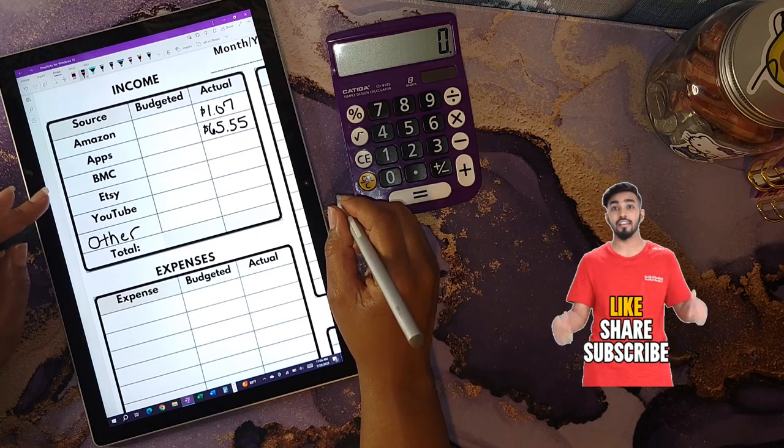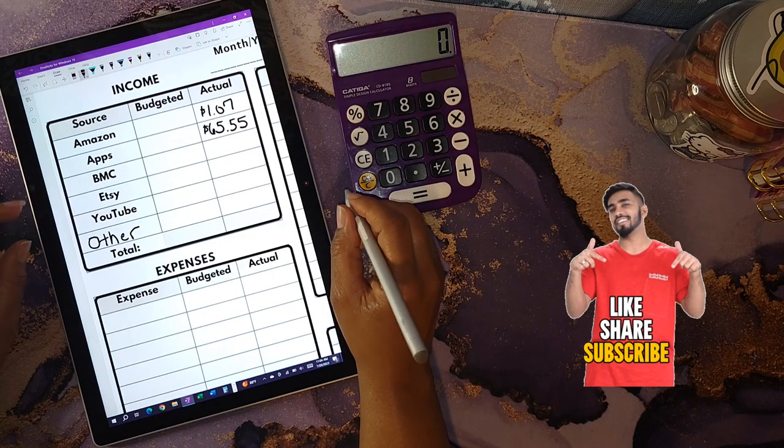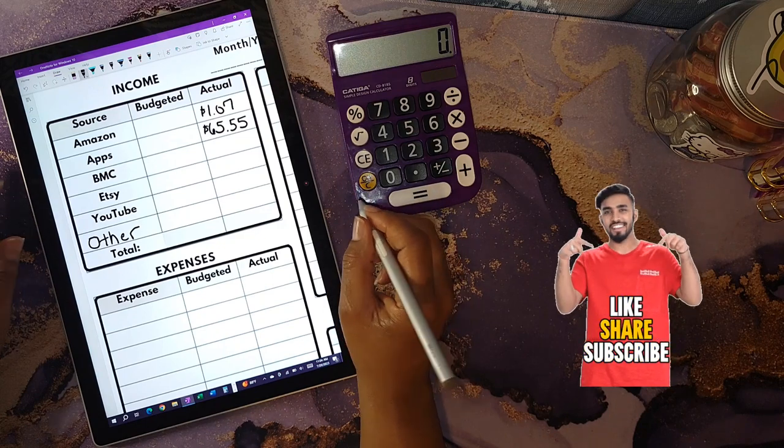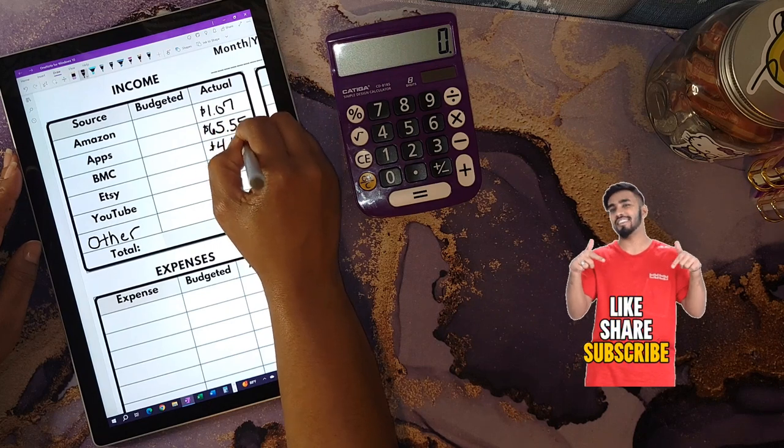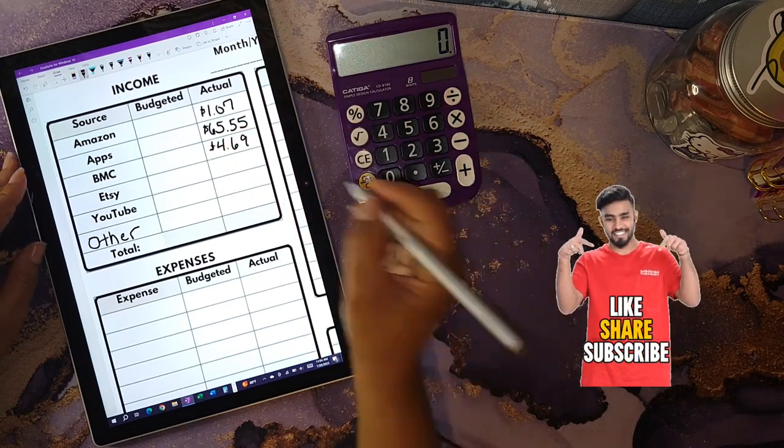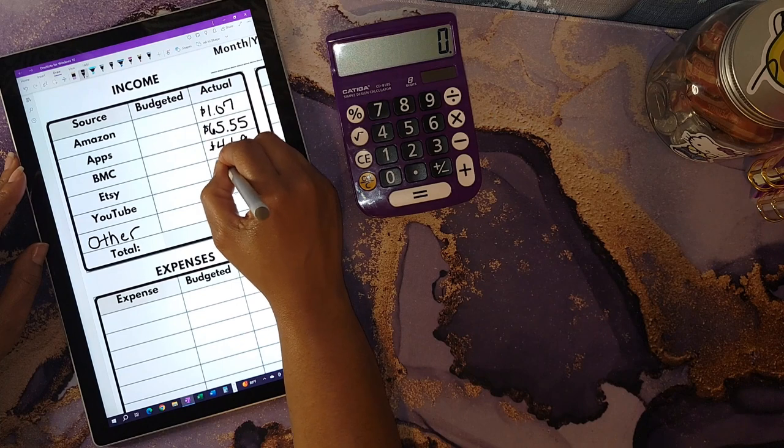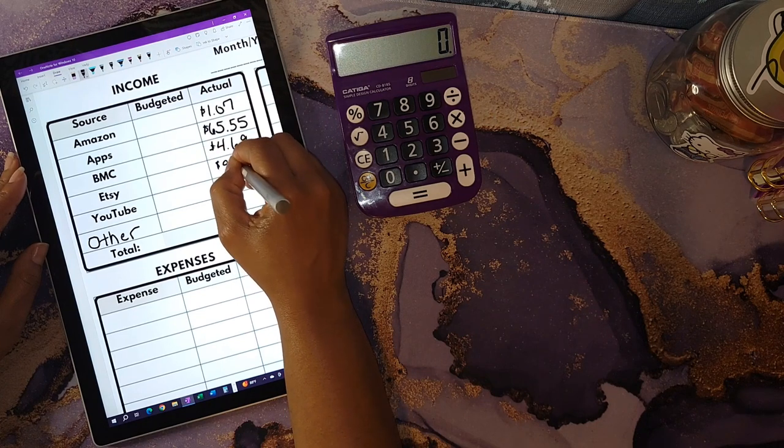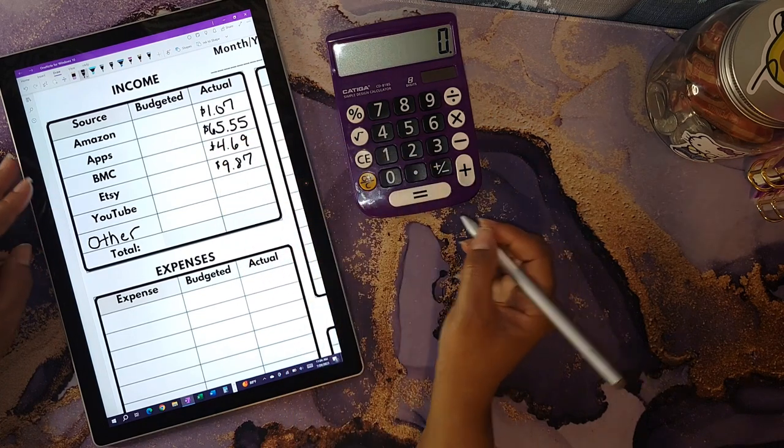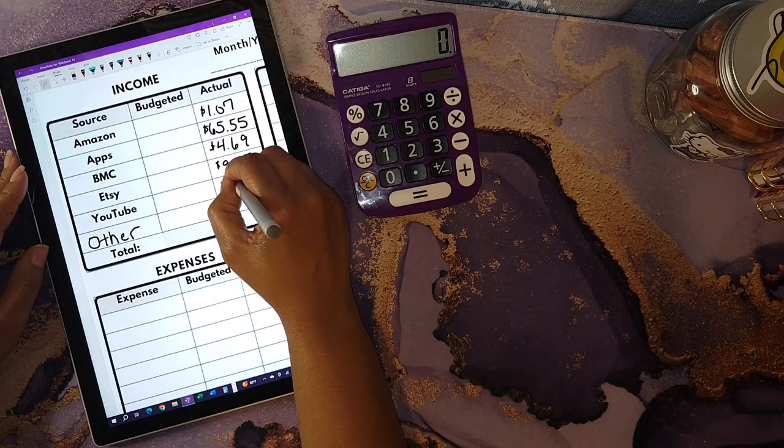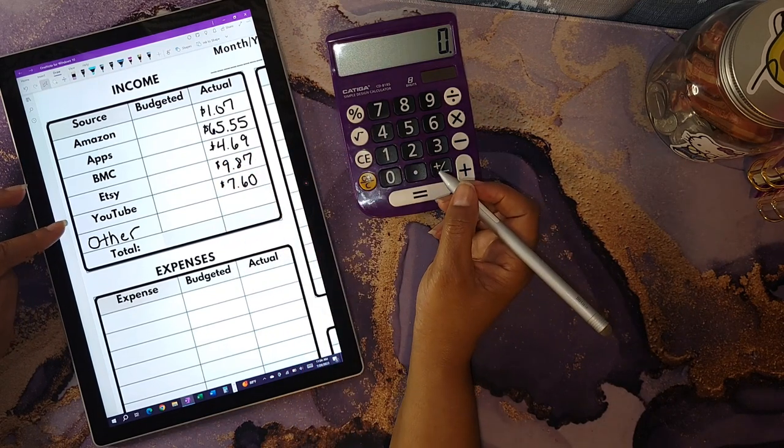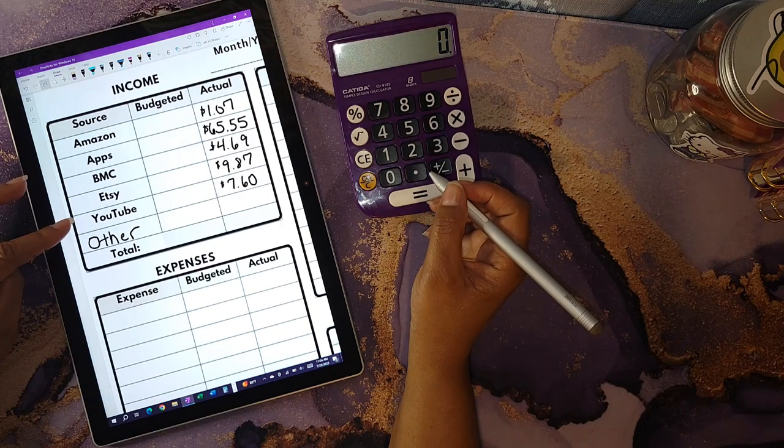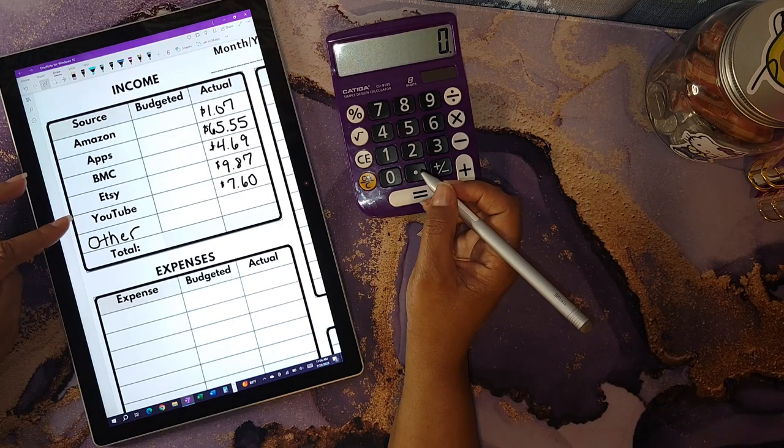For Buy Me a Coffee, I was able to make four dollars and sixty-nine cents. On Etsy, I was able to make nine dollars and eighty-seven cents. On YouTube, I was able to make seven dollars and sixty cents. The seven dollars and sixty cents came from my YouTube store.